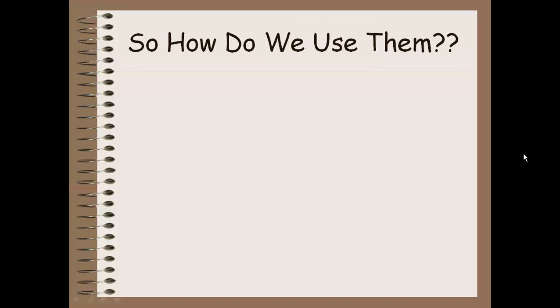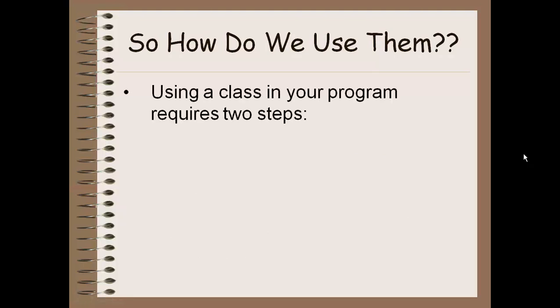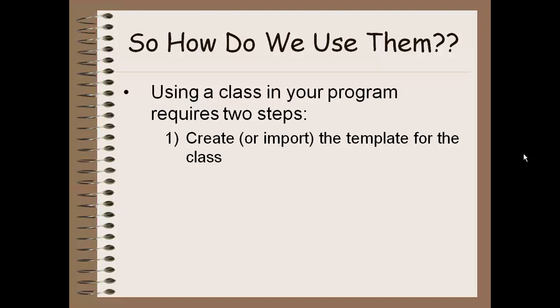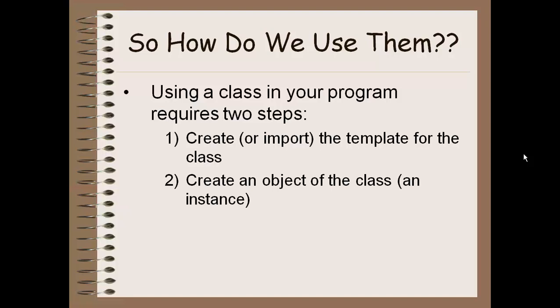So how do we actually do this in Java? We have to do this in two steps. The first step is to either create the template — which we're going to learn how to do today — or import the code from somewhere else, which is what we've been doing so far. Every time at the beginning of our programs where we say import hsa.console or import java.util, we're importing those class templates that someone else has programmed. Once we've done that, we can make an object of the class, or an instance of that class, and start using it. Whenever we did StringBuffer equals new StringBuffer, we've made an object and can start using the methods like append. Or new Console, and then c.print, c.println.